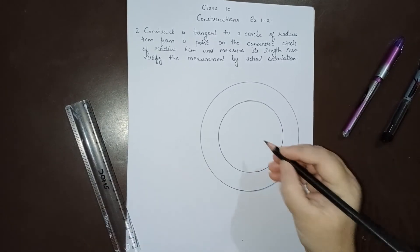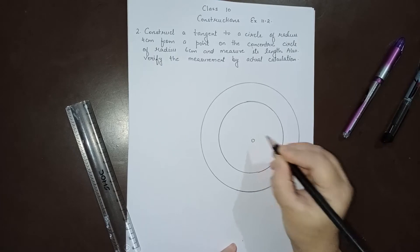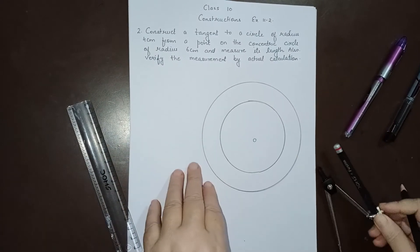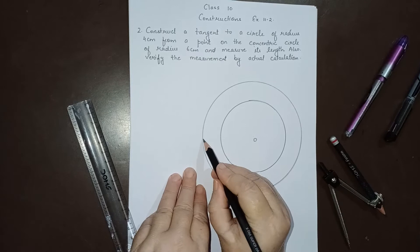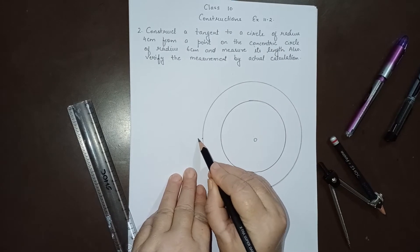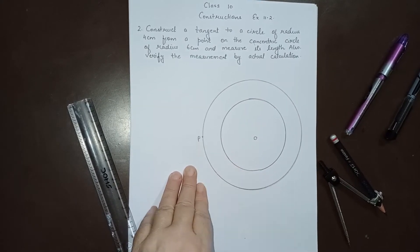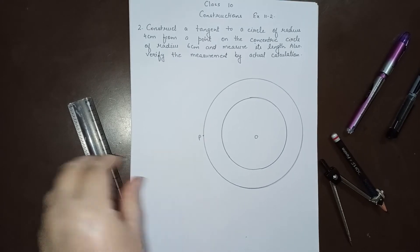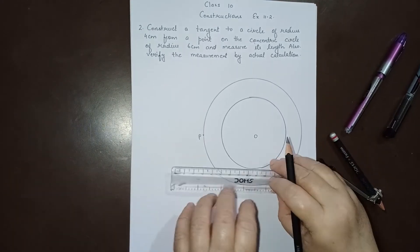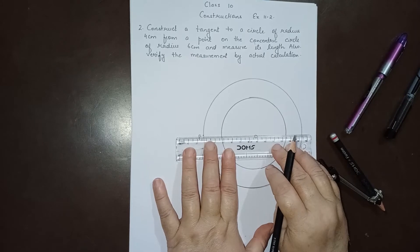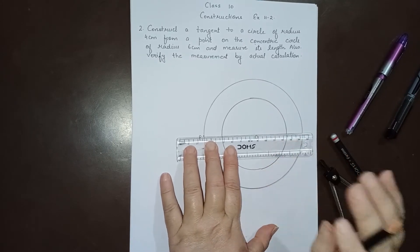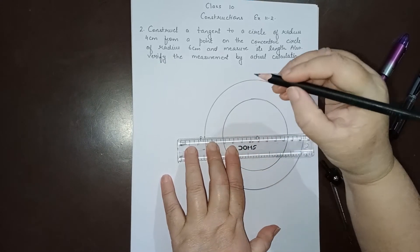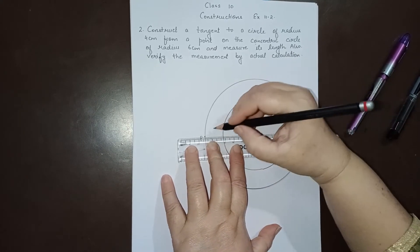The center is O for both circles. The external point from where we have to draw the tangents lies on the outer circle, whose radius is 6 centimeters. We have to make tangents to the inner circle from a point on the outer circle.